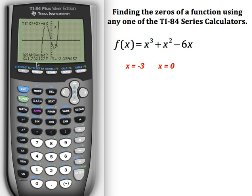Then it's asking me for the right bound. So I am going to go to the right and hit enter. And again, lastly, the guess, I'm going to back up and get a little bit closer to that zero, and hit enter.